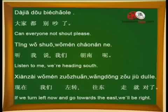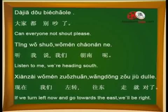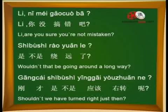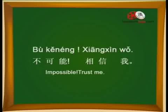大家都别吵了，听我说，我们朝南了。现在我们左转，往东走就对了。 — Can everyone not shout please? Listen to me, we're heading south. If we turn left now and go towards the east, we'll be right. 李，你没搞错吧？是不是让远了？刚才是不是应该右转呢？ — Li, are you sure you're not mistaken? Wouldn't that be going around a long way? Shouldn't we have turned right just then? 不可能，相信我。 — Impossible, trust me.